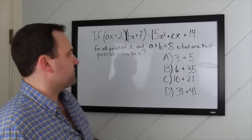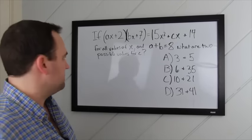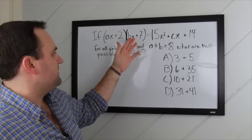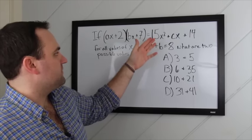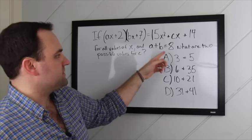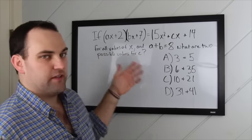So this problem here is from the new SAT and it's from the no calculator section. It says if ax plus 2 times bx plus 7 equals 15x squared plus cx plus 14 for all values of x and a plus b equals 8, what are two possible values for c?